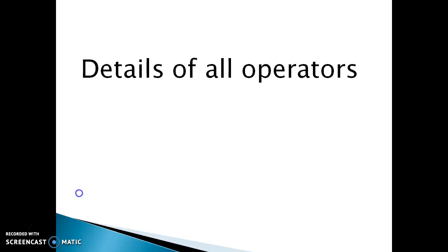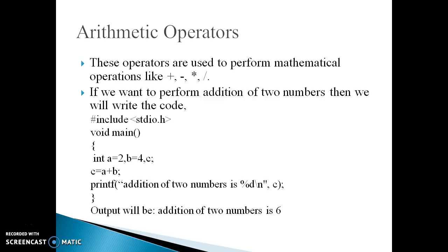First let's see the arithmetic operators. An arithmetic operator performs mathematical operations such as addition, subtraction, and multiplication on numerical values — that is, on constants and variables. The arithmetic operators are: plus for addition or unary plus, minus for subtraction, asterisk for multiplication, slash for division, and the modulo operator for the remainder of a division. Here is an example of arithmetic operators.